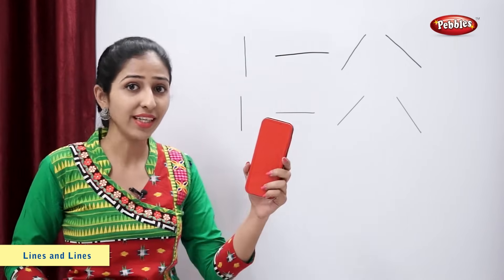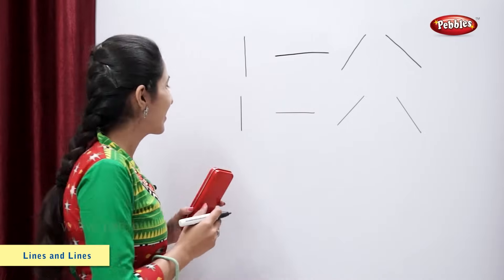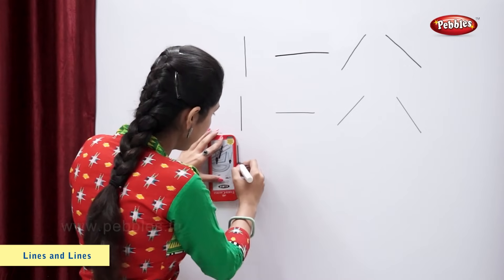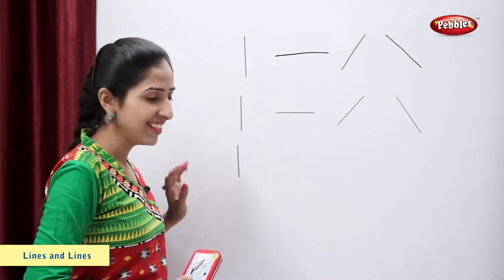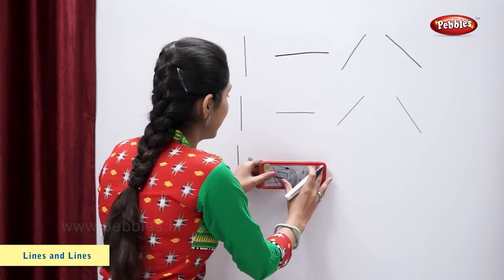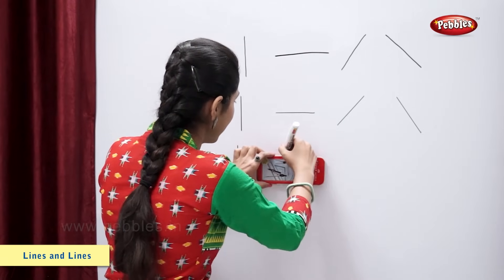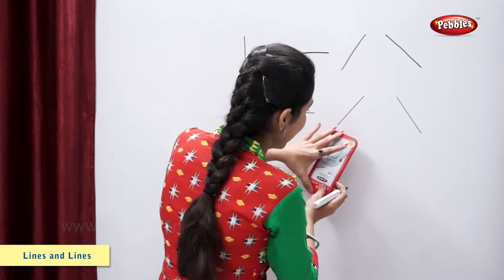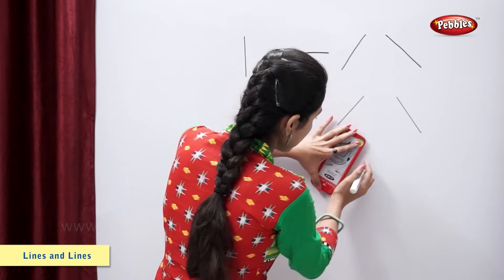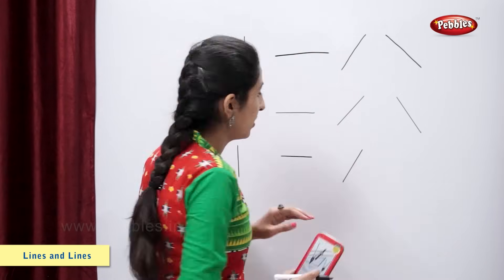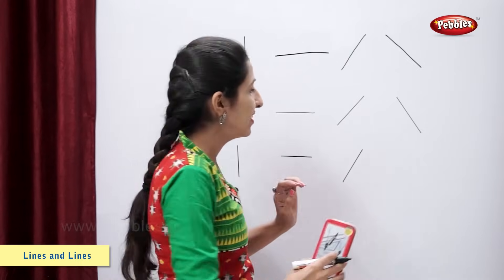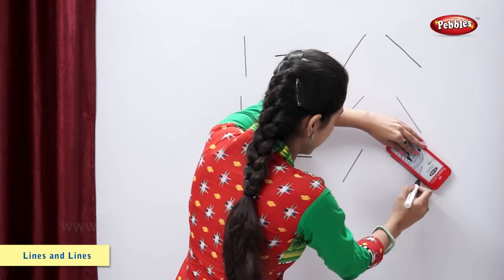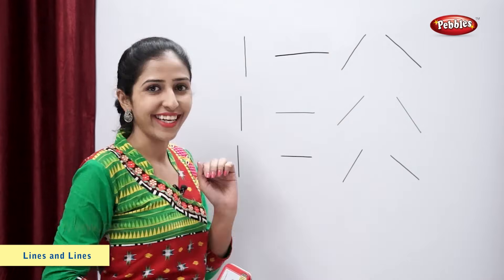Let's draw some lines using the compass box. Standing line, sleeping line, slanting line, one more slanting line.